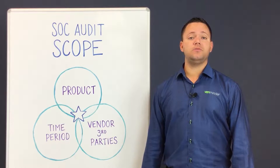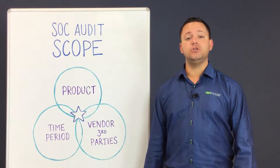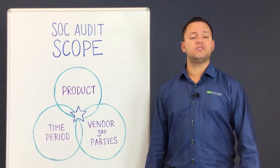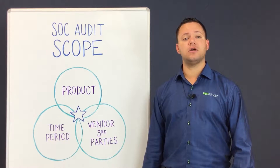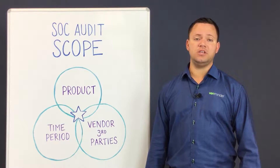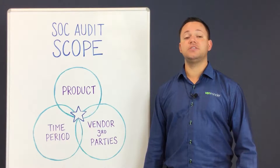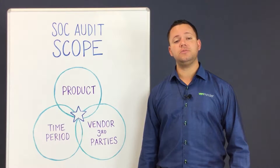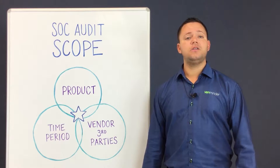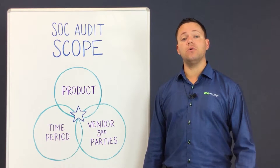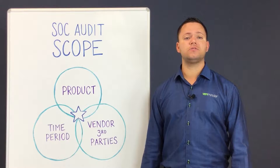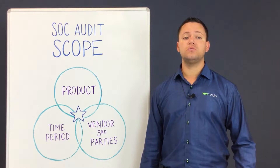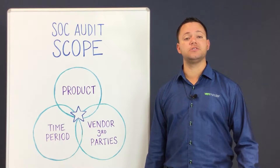If you run into a vendor with a report older than one year, you should ask why. Not unlike the first item, money usually comes into play with the second item — the period of time the audit covers. We see this in vendors who are typically smaller and do not have the staff to continually manage an audit. Another reason is that it's easier to grow and change processes without worrying about the impact to the in-scope control environment, so companies may only do audits every other six months.